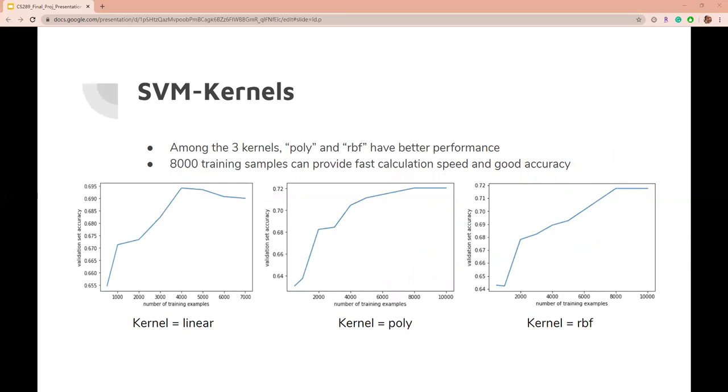For SVM, we tried linear, poly, and RBF kernels. Poly and RBF have higher accuracy than the linear model, possibly because they use non-linear hyperplanes.